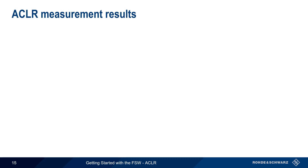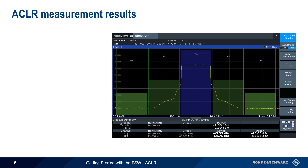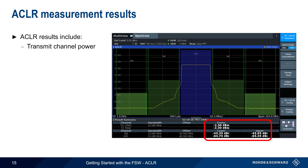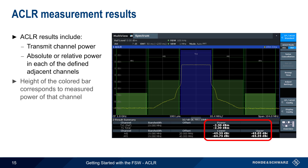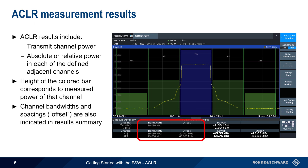After channels and settings have been configured, the ACLR measurement will run automatically. The default results include the transmit channel power, as well as the absolute or relative power in each of the defined channels on a per-channel basis. In the graphical display, the heights of the colored bars correspond to the measured powers for each channel. The results summary also shows the bandwidth and offset (that is, the spacing) for each channel, and any configured limit violations will be indicated in red.